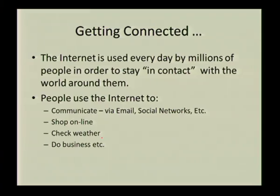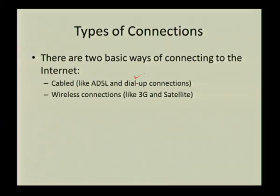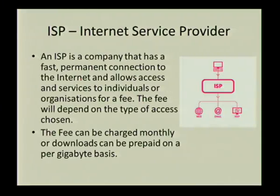What do we need to get connected? People communicate every day via the internet — we use it for email, social networks, shopping online, checking the weather, and doing business. There are two basic types of internet connections: cabled, with an example being ADSL, and wireless, like 3G and satellite. Before we can get an internet connection, we need an ISP — an internet service provider — which is a company that gives you access to the internet for a monthly fee.